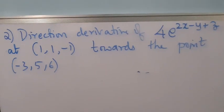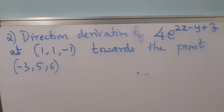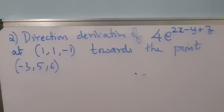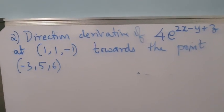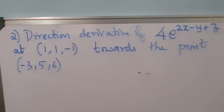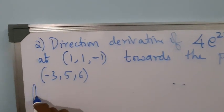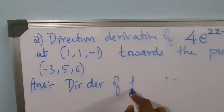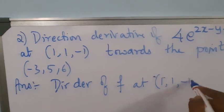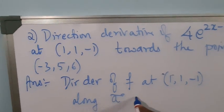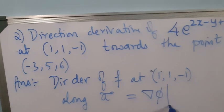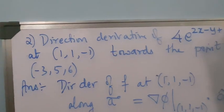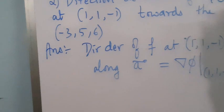We'll consider another example: find the directional derivative of φ = 4e^(2x - y + z) at (1, 1, -1) towards the point (-3, 5, 6). The key to solving this problem is understanding what vector a is. The directional derivative of f at (1,1,-1) along vector a is grad φ at (1,1,-1) dot a-hat.